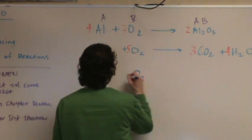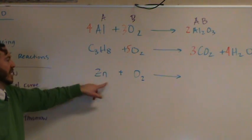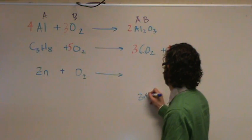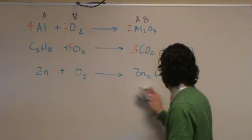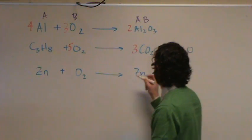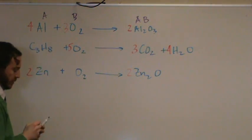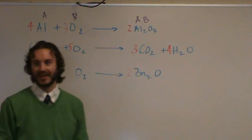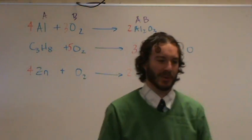Next one: Zn plus O₂. Similar to number one — these are two elements, so it's synthesis. Zn is always positive 2. Oxygen is negative 2. When you crisscross them: Zn positive 2, O negative 2 — they cancel out and you get ZnO. Then you need a 2 in front of Zn on the left and a 2 in front of O₂. One student suggested 2 but then corrected to 4 — you need 4 in front of Zn and 2 in front of O₂ to balance it.